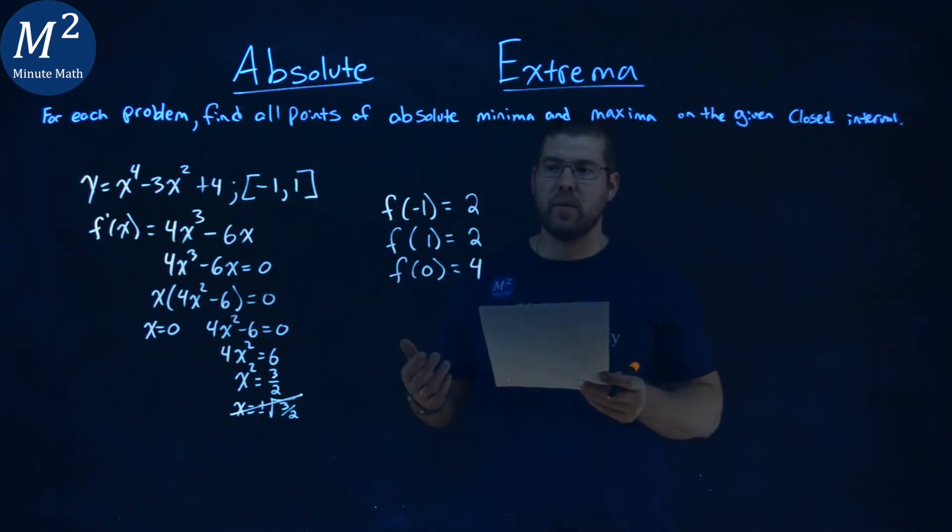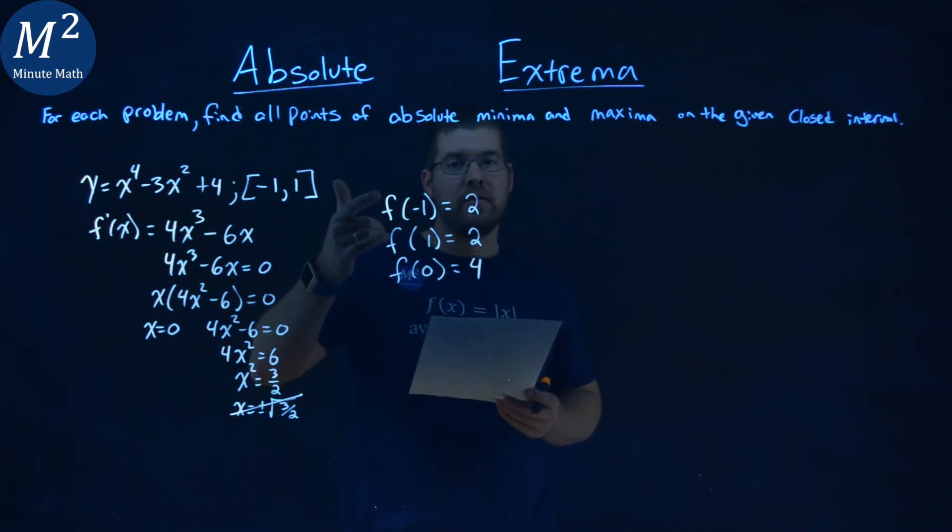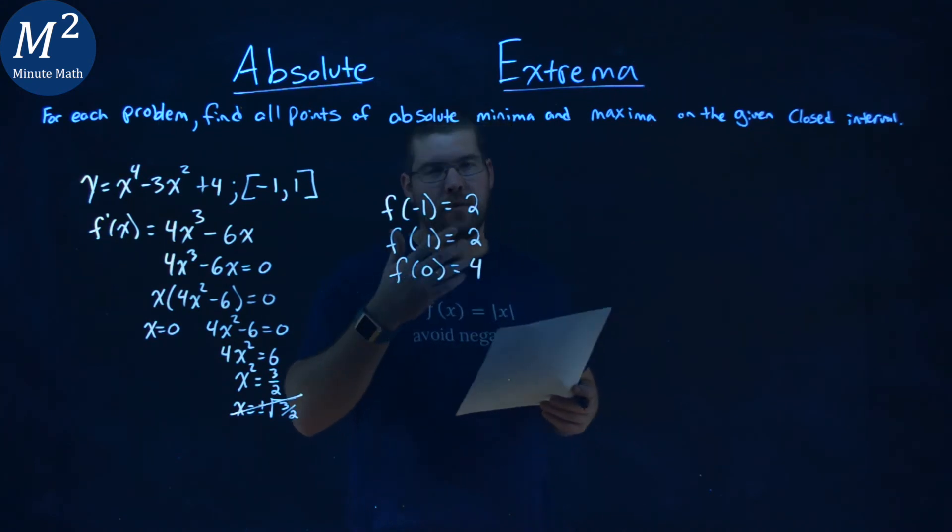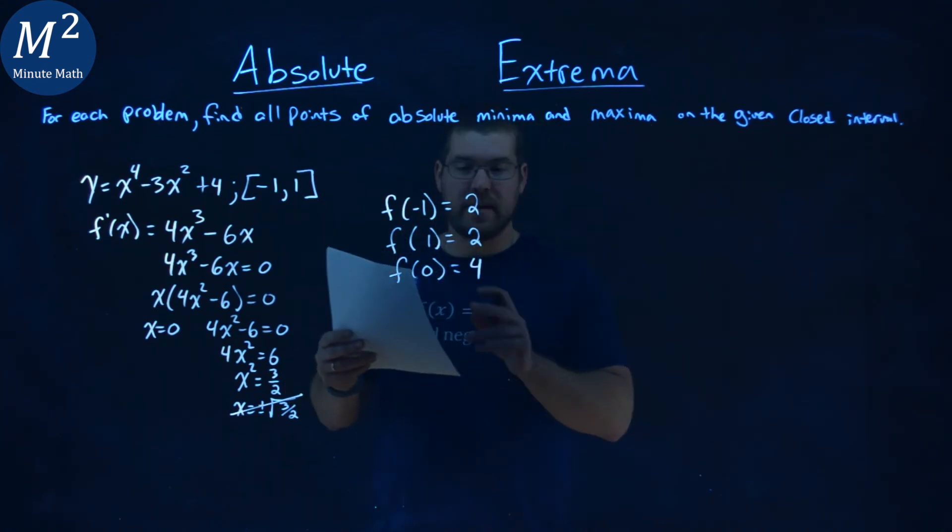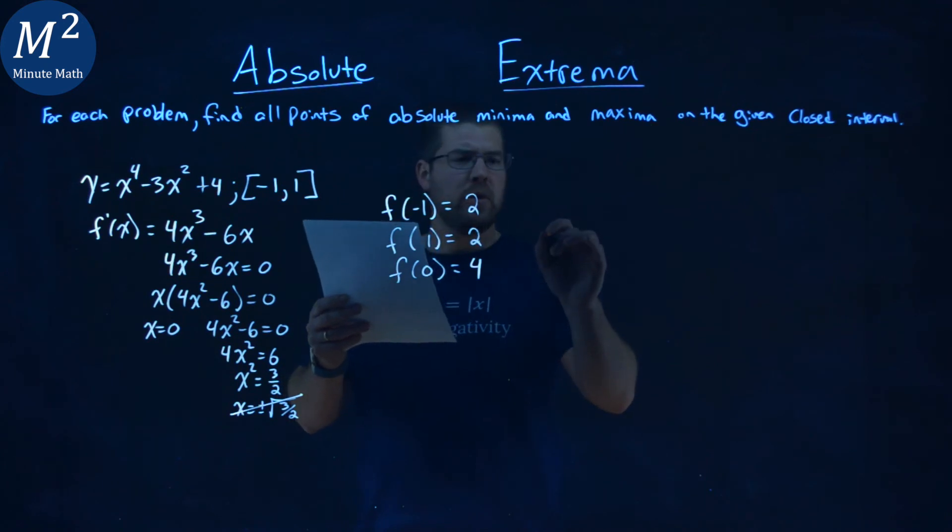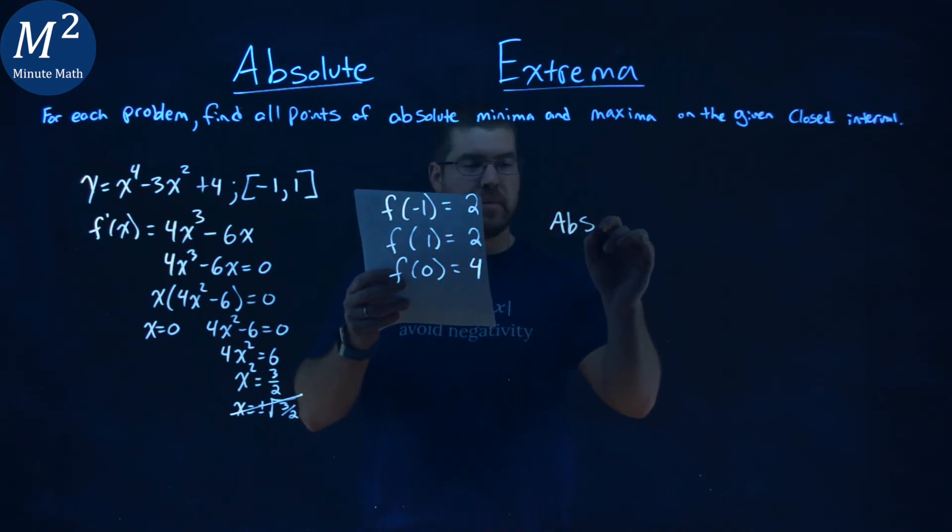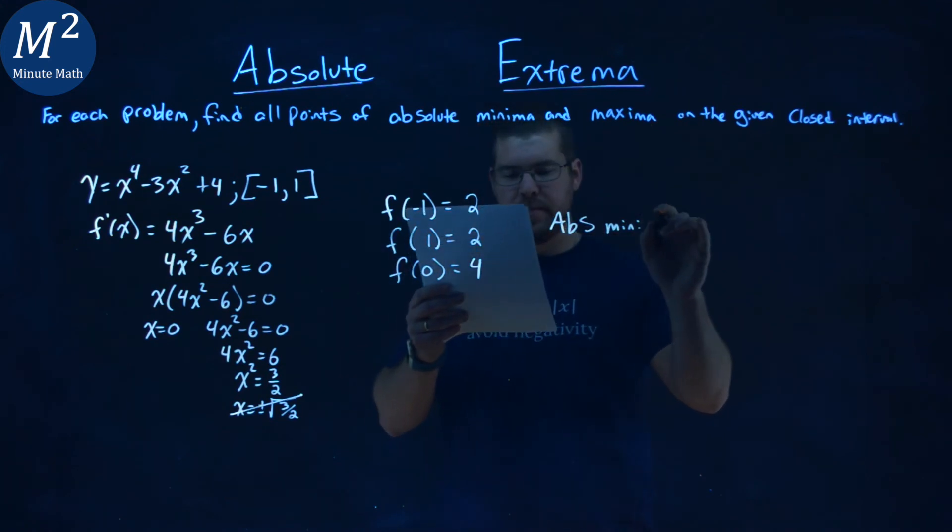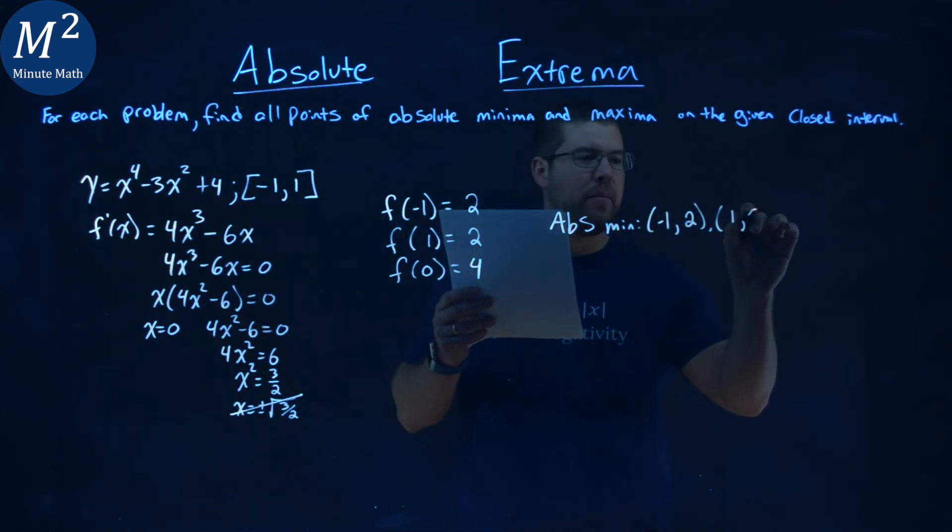So what does this tell us? Well, that means we have two minimum values that are the same at a y value of positive 2, and one maximum value when y is 4. Our maximum value of 4 occurs when x is actually 0. So our absolute minima, the smaller y value here, is negative 1 comma 2 and 1 comma positive 2.